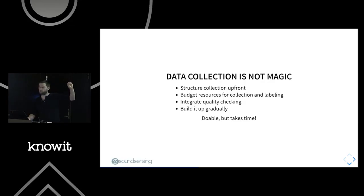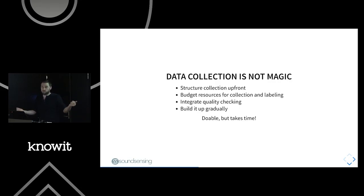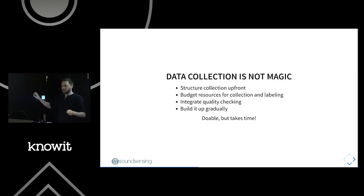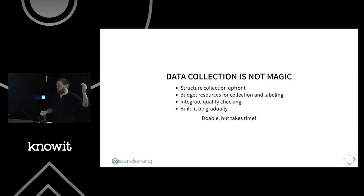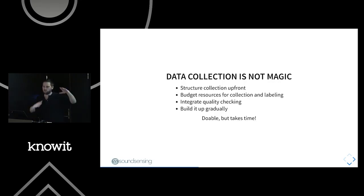It's mostly about structuring your collection upfront: take this task seriously, budget the required resources for collecting and labeling data, and integrate quality checking. Don't assume labeled data is perfect — it's an artifact of your process and natural variation. Check whether people agree with each other on the task, and whether customer expectations exceed what humans can actually do. Start small, iterate, evaluate quality, improve. All clients I've worked with find this the biggest surprise — it takes 10 times more effort than expected.